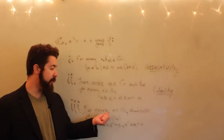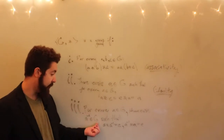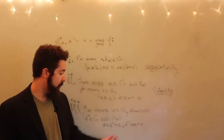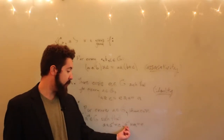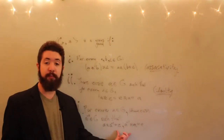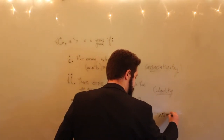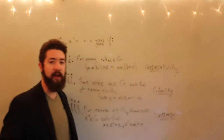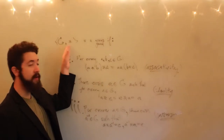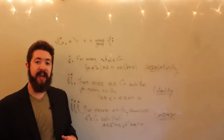Property three: for every element A in G, there exists an element A inverse in G such that A star A inverse equals the identity element, and A inverse star A also equals the identity element. We need both of these to hold. This is the inverse property. If a set G closed under a binary operation star satisfies all three of these properties, then we call G a group.